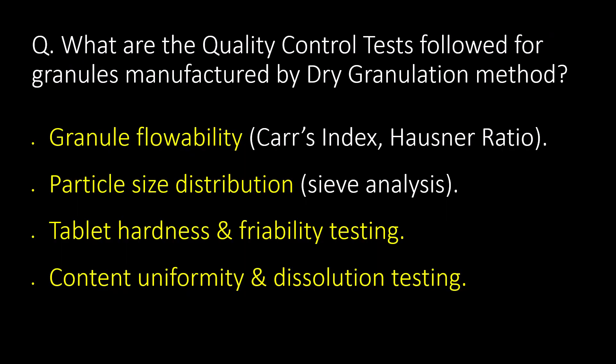What are the quality control tests for granules manufactured by dry granulation? First, granule flowability by Carr's Index or Hausner Ratio. Second, particle size distribution by sieve analysis. Third, tablet hardness and friability testing. And fourth, very important: content uniformity and dissolution testing.